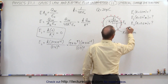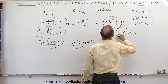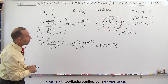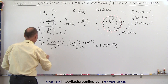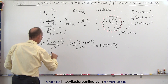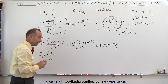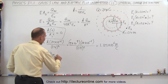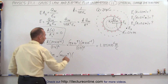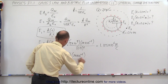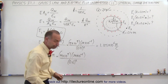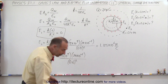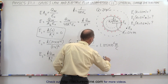Finally, to find E3 at 0.6 meters, we draw a Gaussian surface at that radius. The charge enclosed is still 20 microcoulombs, and the electric field is perpendicular to the surface with uniform magnitude. So E3 equals 9×10⁹ times 20×10⁻⁶, divided by 0.6 squared, which gives exactly 500,000 newtons per coulomb.